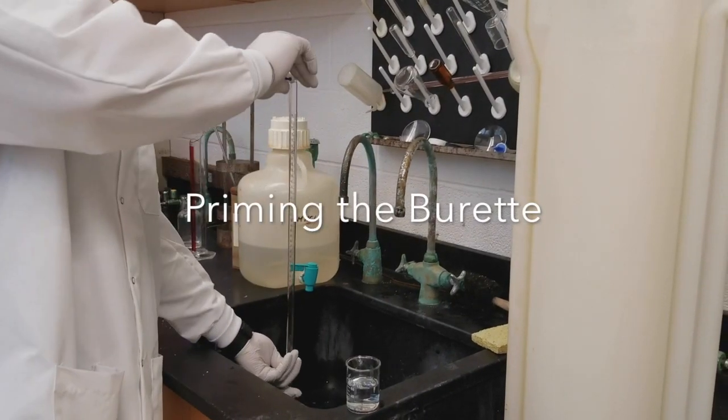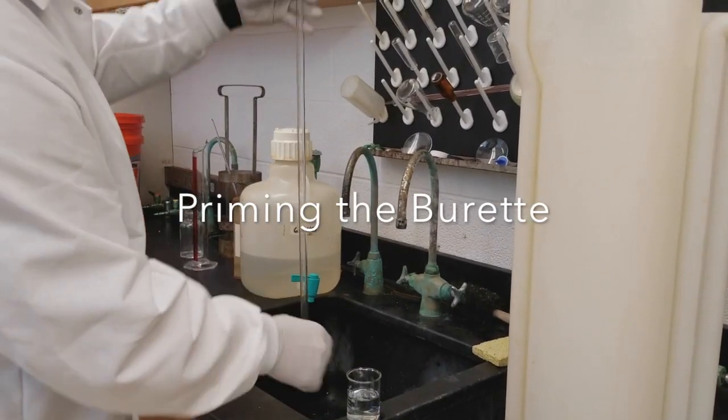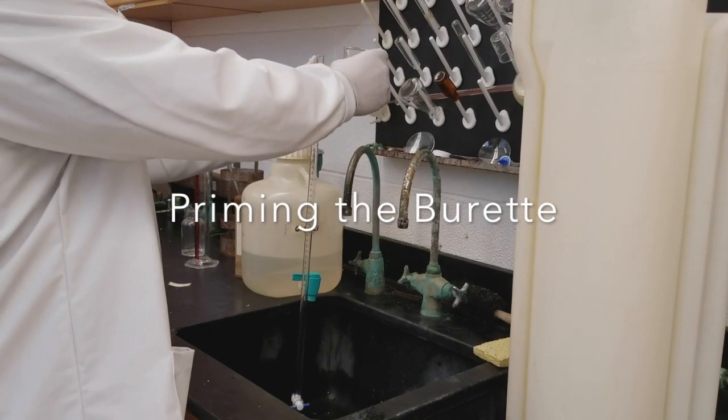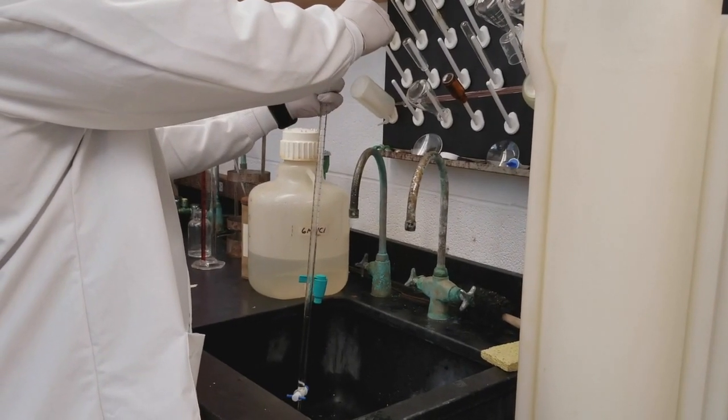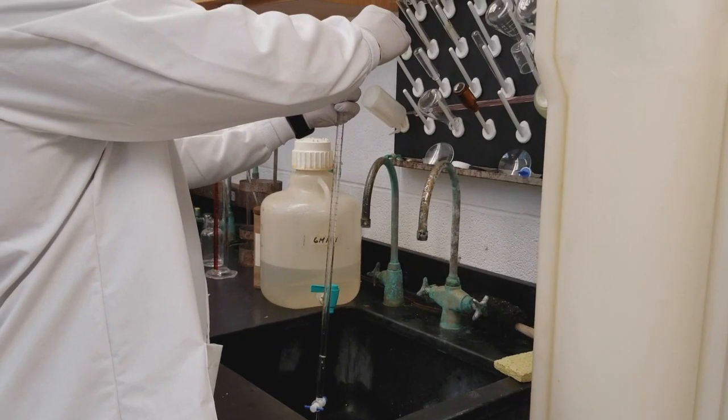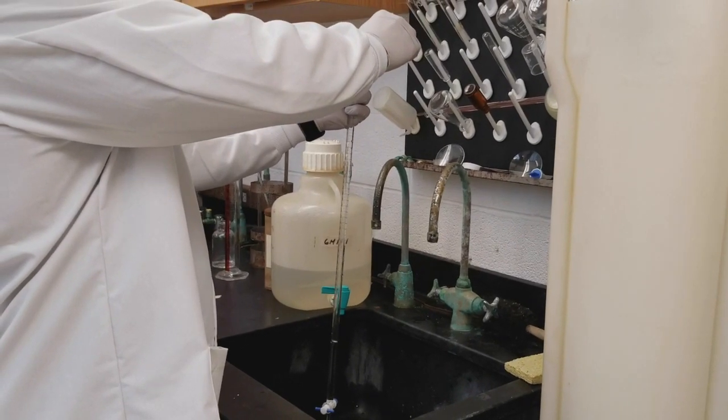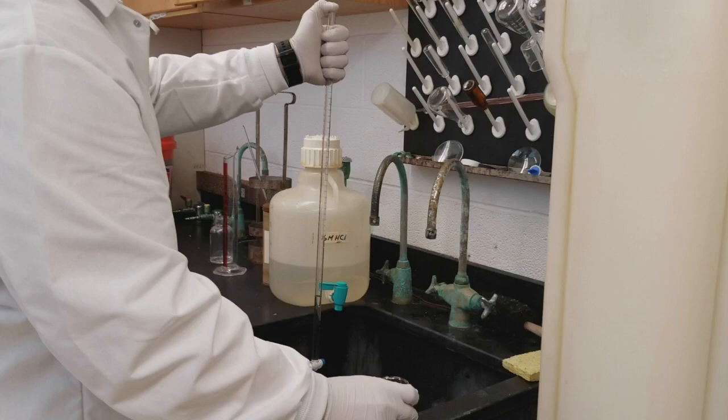Okay, so we're just emptying out the solution that was in there before when you came into lab. Now we're going to pour in about 15 milliliters of the dilute acid solution that you prepared.